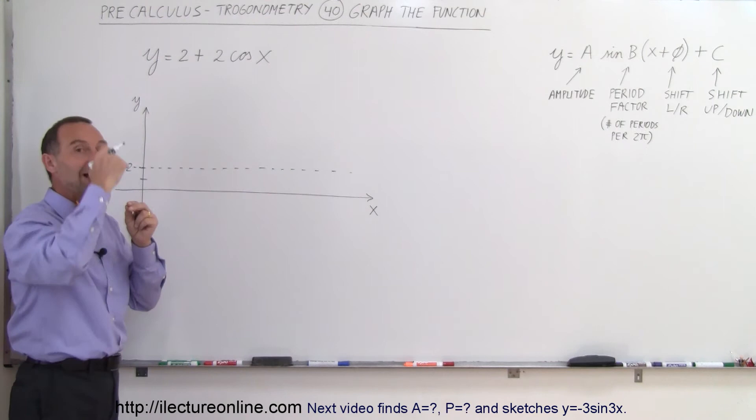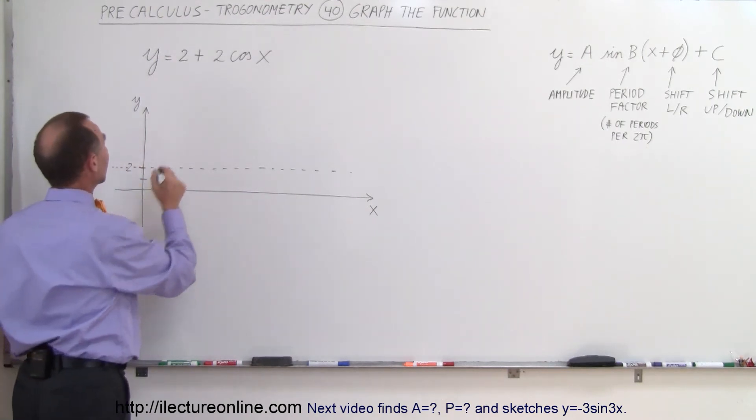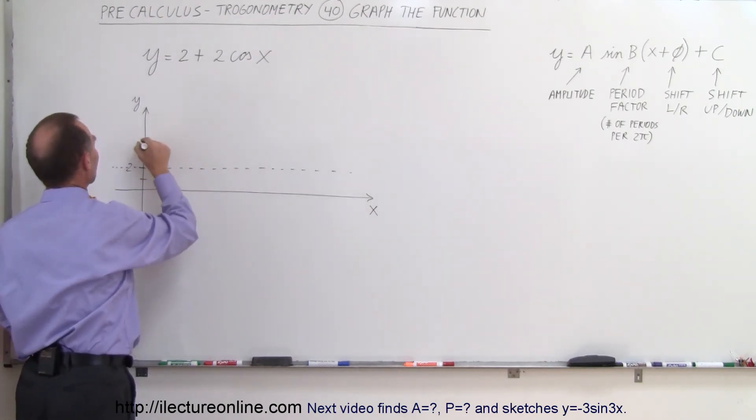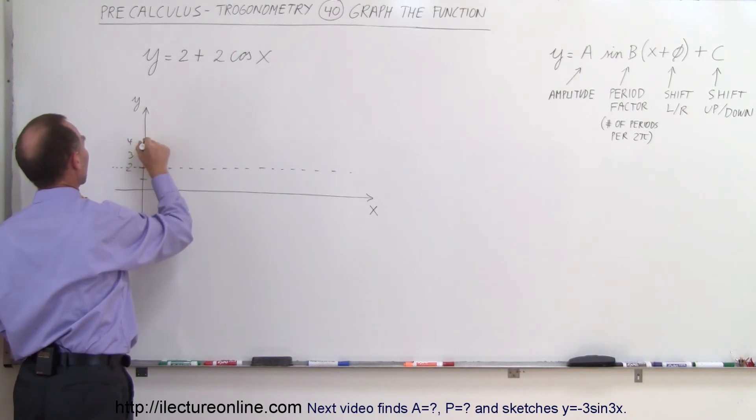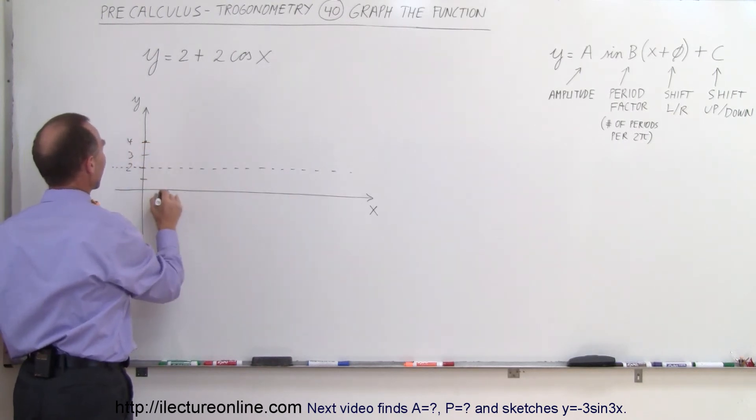Remember that cosine starts at a high amplitude and its amplitude of 2, so that's 3, 4, 3, 4, so it starts at this point and we'll go all the way down to this point so the function will look like this.